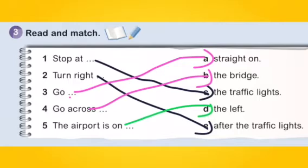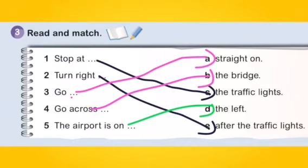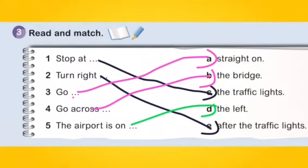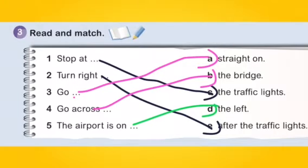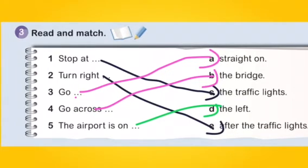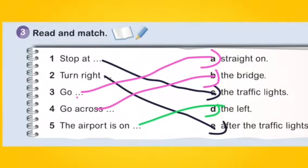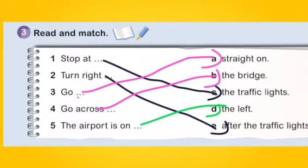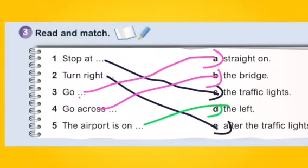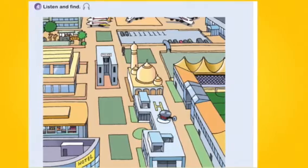Number 1: Stop at — C, traffic lights. Number 2: Turn right — E, after the traffic lights. Number 3: Go — A, straight on. Number 4: Go across — B, the bridge. Number 5: The airport is on the — D, the left. Lesson one, Activity four — Listen and find.